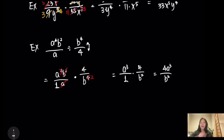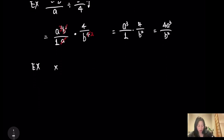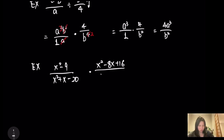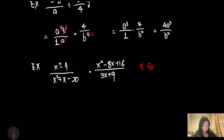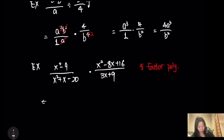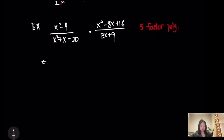Just like reducing a rational expression, we can similarly reduce a rational function — one that contains a polynomial. The first step you want to do is factor all of the polynomials first. We totally have 4 polynomials. We did lots of factoring exercises earlier, so this should be very quick.